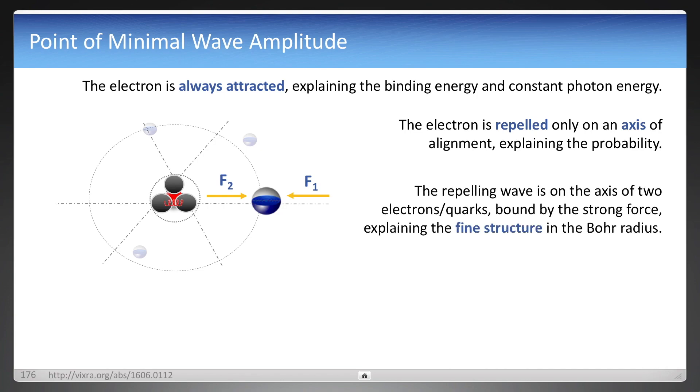And that axis of alignment is for a wave going through two quarks slash electrons, which are bound by the strong force. And that explains why the fine structure constant is in the Bohr radius, as I'll show shortly.